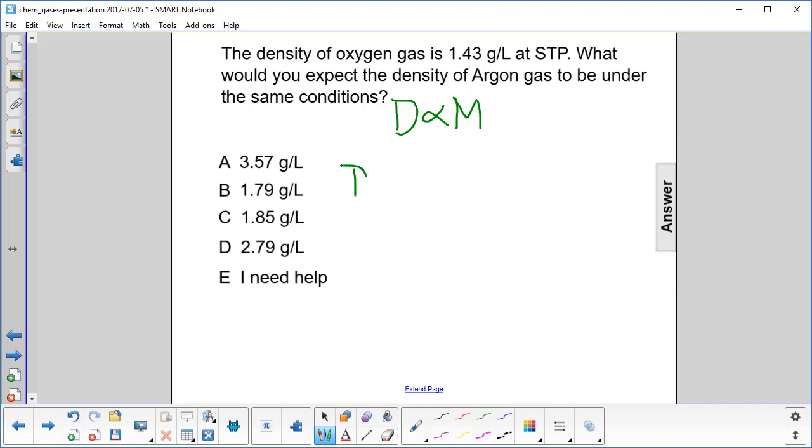If we want to find the density of argon, we're going to say that's equal to the molar mass of argon over the molar mass of oxygen times the density of oxygen.